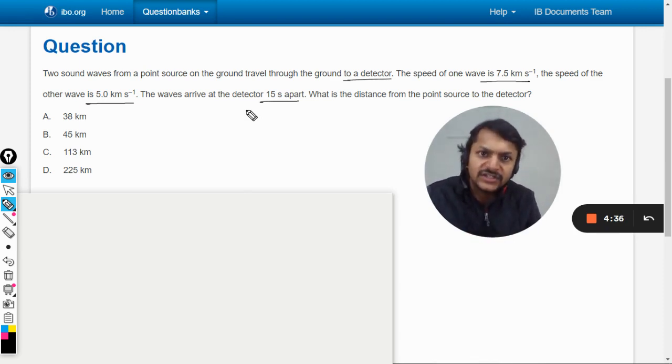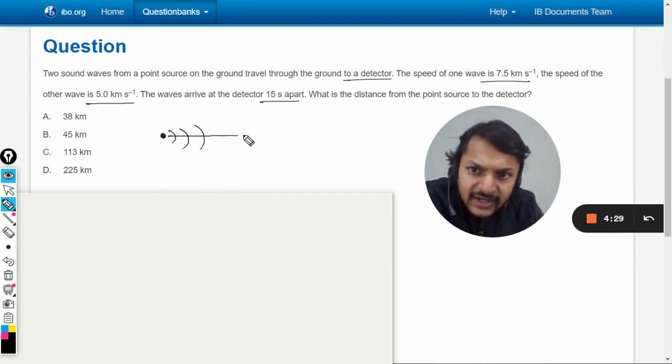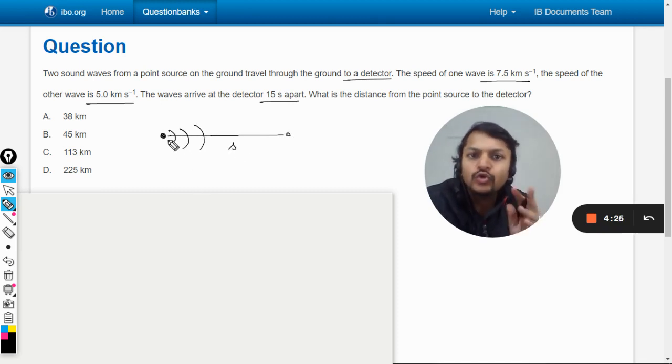So let us say this is the point source which is giving the wave, and the detector is s distance away. Now there are two different waves which have been created.